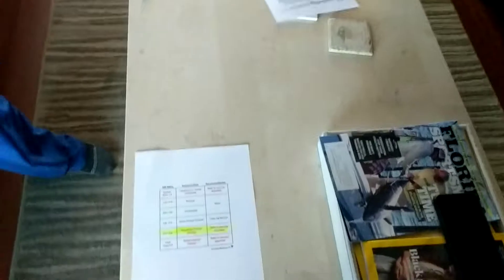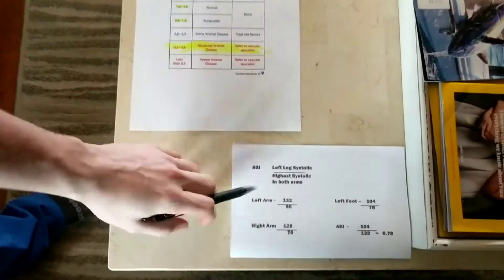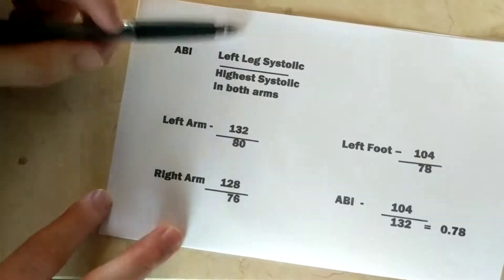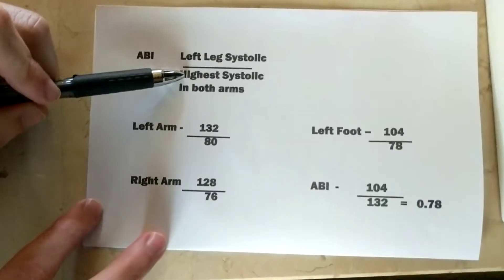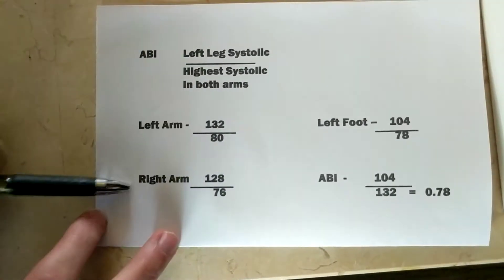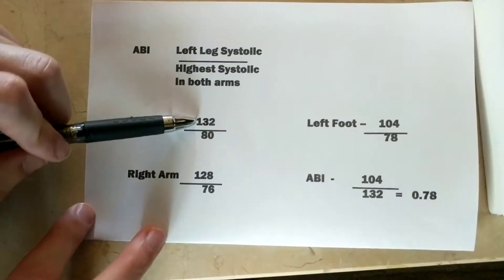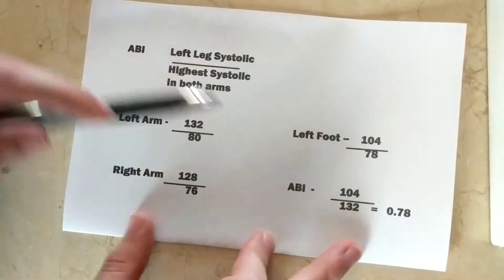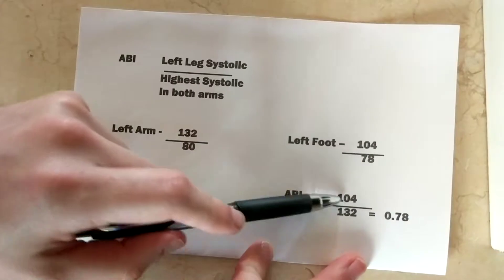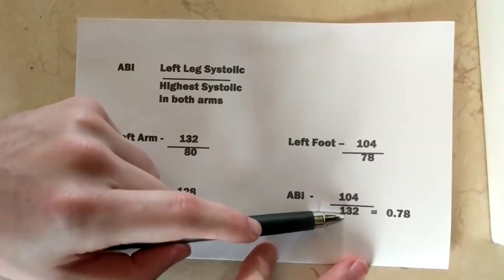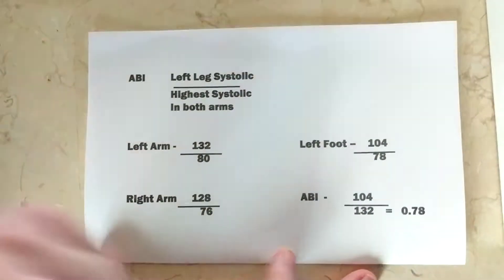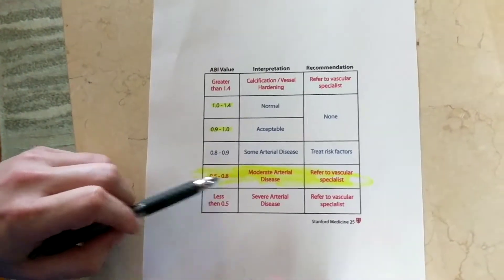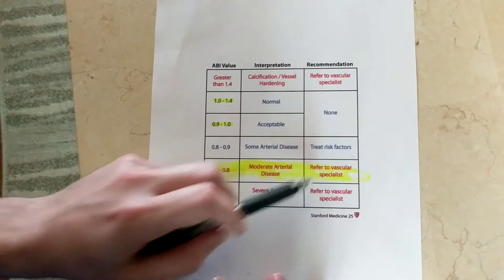So now we have our numbers. The ankle brachial index is your left leg systolic — the top number — over the highest systolic in both arms. Her left arm was 132 over 80 and her right arm was 128 over 76, so we take 132 as it's higher. Her left foot blood pressure was 104 over 78, so we take the left leg systolic of 104 divided by the highest arm systolic of 132, which gives 0.78. Referring to Stanford's ankle brachial index chart, 0.78 indicates moderate arterial disease, and you would refer to a vascular specialist.